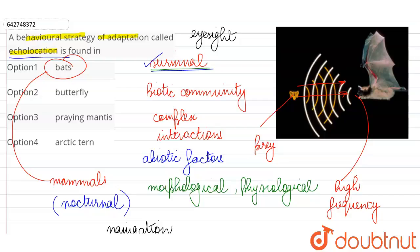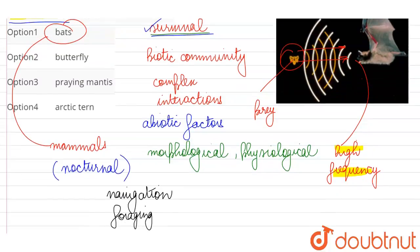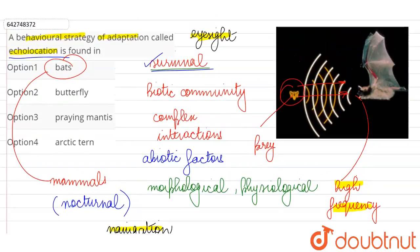So this behavioral strategy of echolocation, where instead of its eyesight, the bat is using high frequency waves in order to navigate its nocturnal surroundings, in order to navigate and forage in the dark, this is called echolocation and it is found in Option 1, the bats.